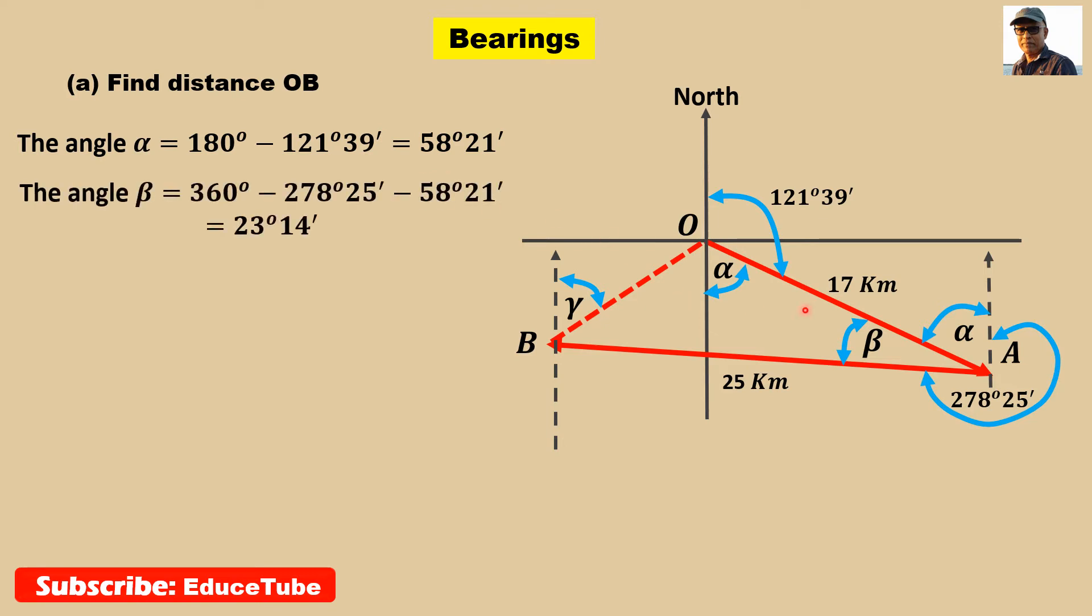To find beta, it is also easy because the full circle angle is 360, minus this angle, minus alpha. Because we got alpha here, we can say this is also alpha. This line and this line are parallel. So easily we can find beta. For this triangle, we got alpha and beta.